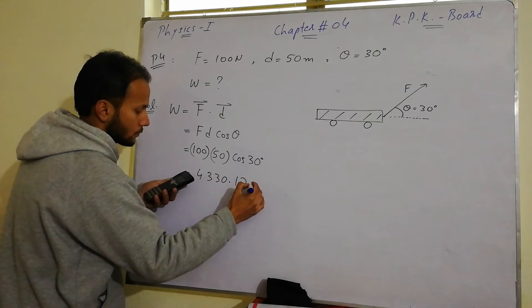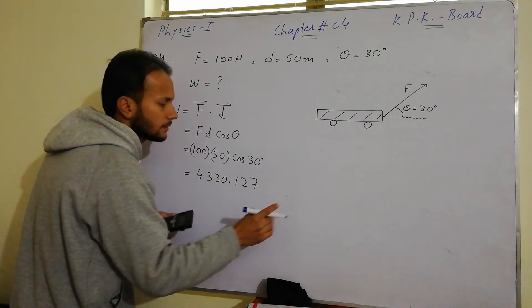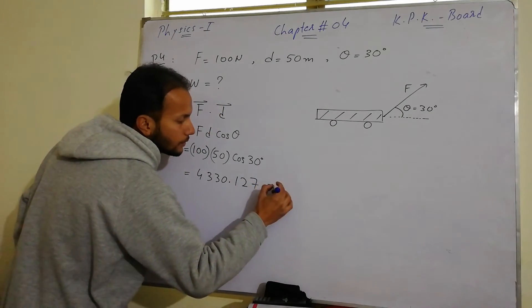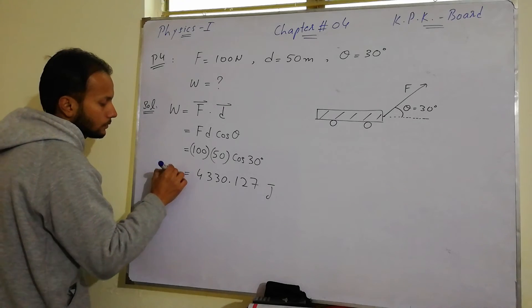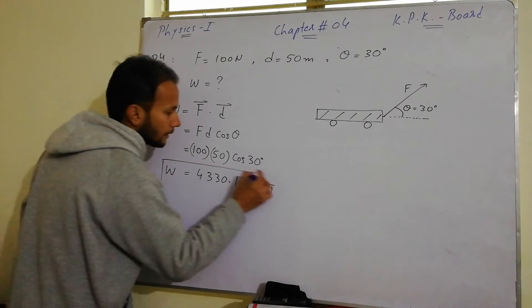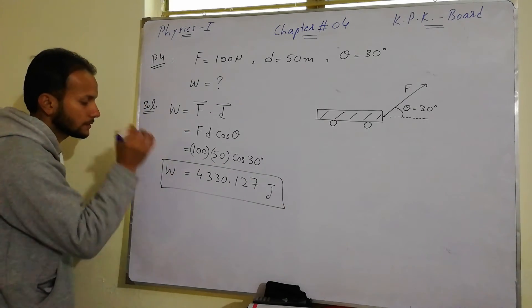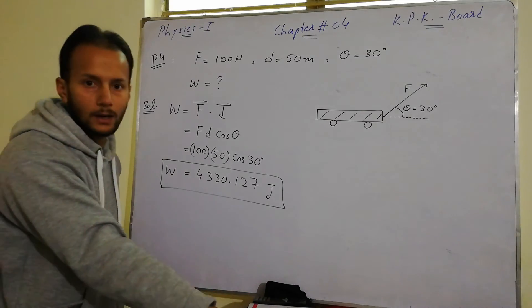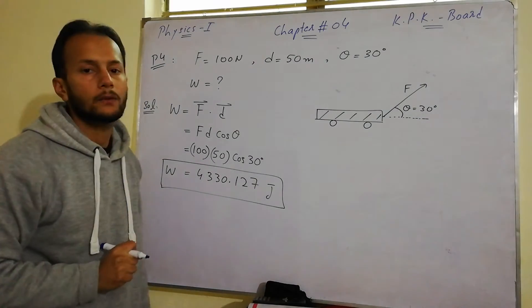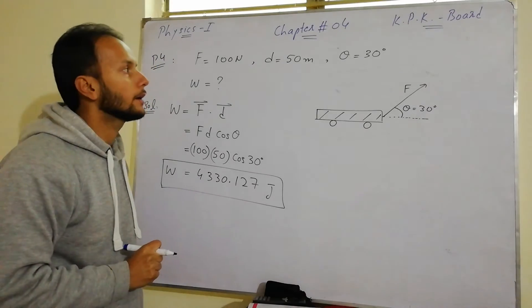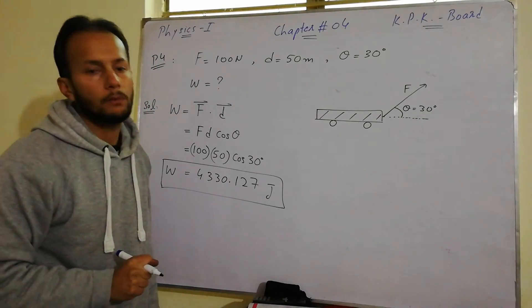This gives us 4330.127 joules. So this is the work done that we have calculated, one person while pulling a trolley by applying force of 100 newton and it covers the distance of 50 meters.